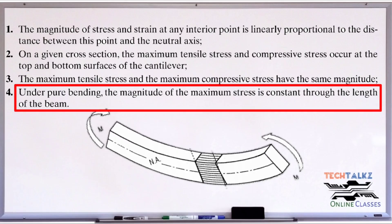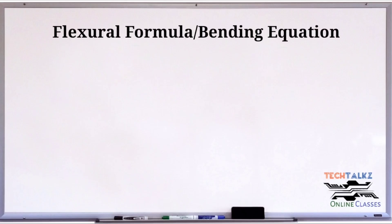Fourth point: under pure bending, the magnitude of the maximum stress is constant throughout the length of the beam.